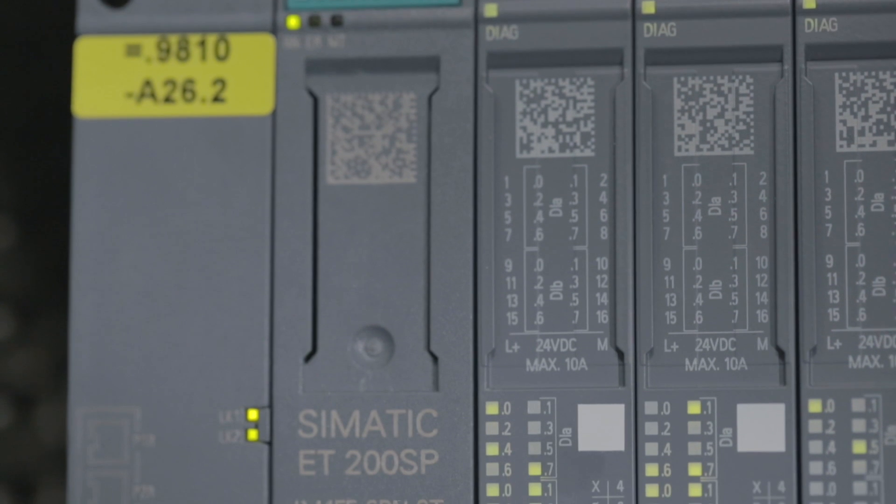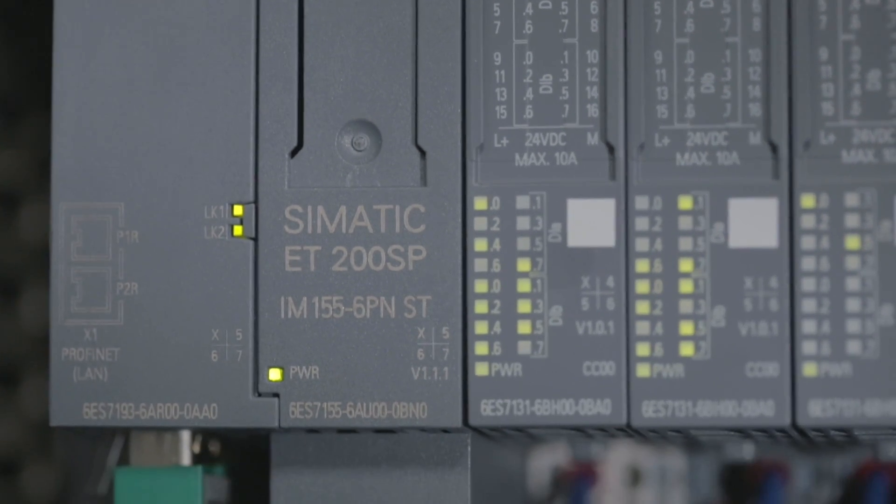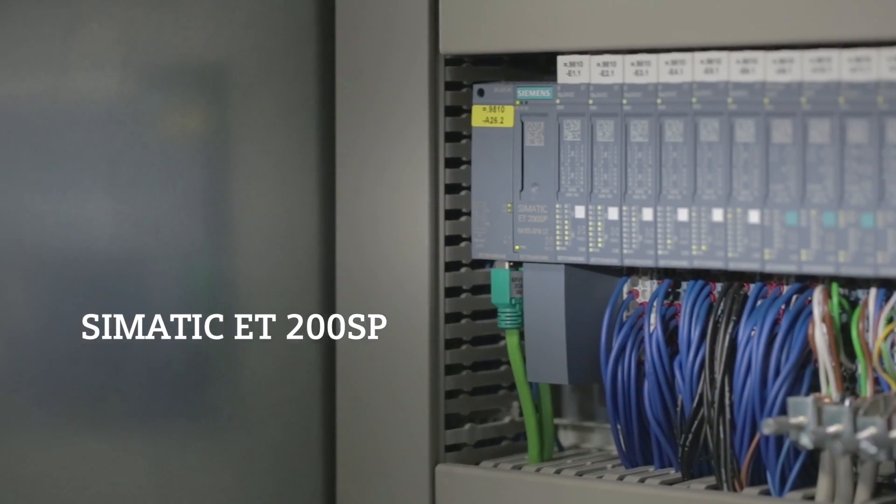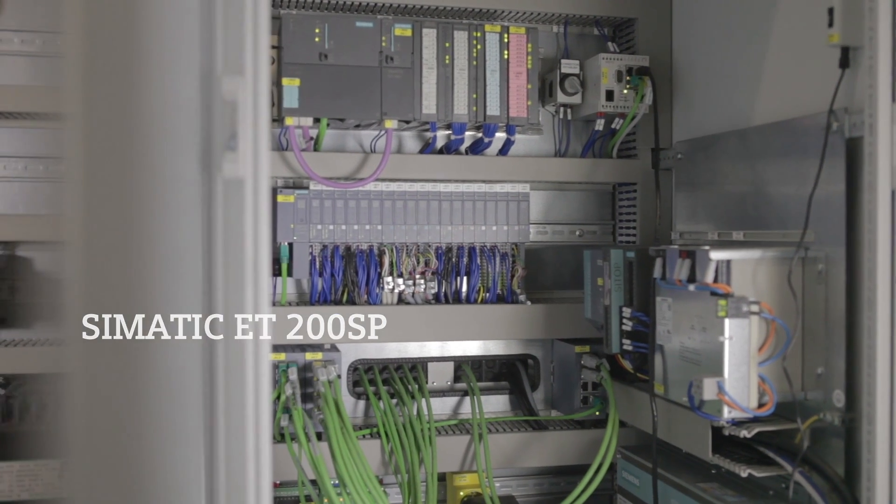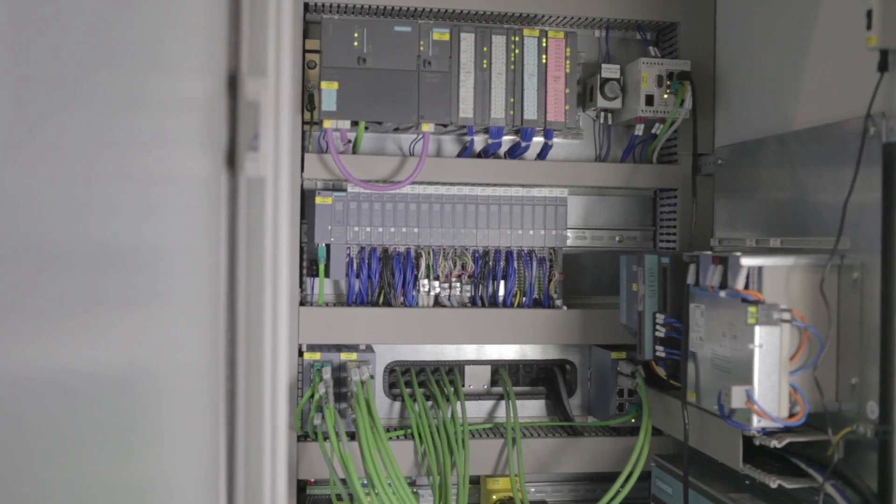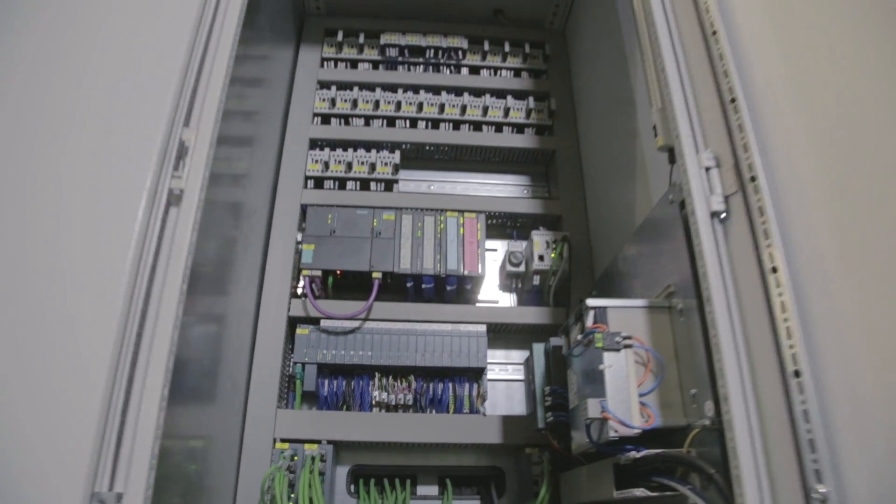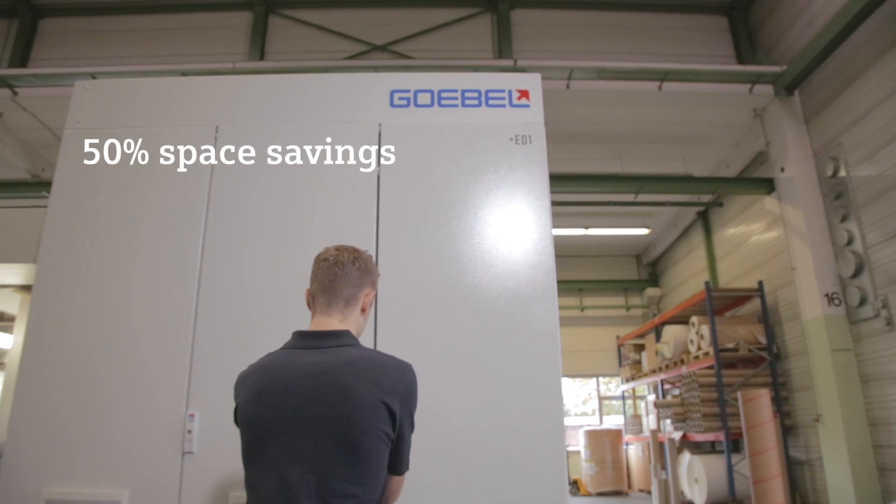The ET 200 SP distributed I/O system makes space-saving and modular configurations possible. The special advantage of the SIMATIC ET 200 SP for Goebel is its compact size in the control cabinet. That means space savings of up to 50%.